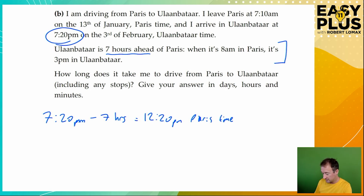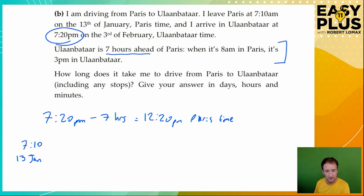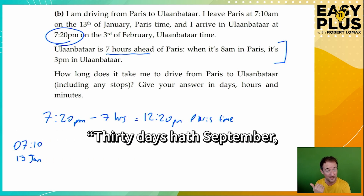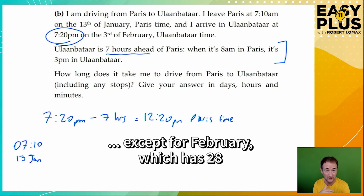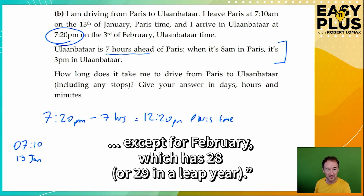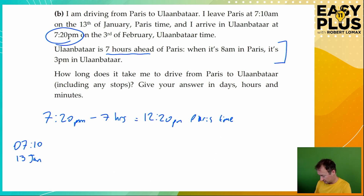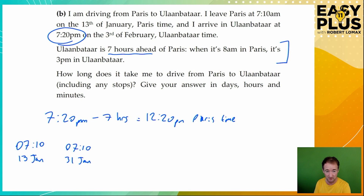So now we're trying to get from 7:10 a.m. on the 13th of January to 12:20 p.m. on the 3rd of February. Let's write in 24-hour time so we don't need to worry too much about a.m.s and p.m.s. Getting from the 13th of January to the 3rd of February is a little bit tricky. Let's get to the end of January first. 30 days hath September, April, June and November — all the rest have 31 except February, which has 28 or 29 on a leap year. So January is a 31-day month. The 13th to the 31st of January is 18 days.